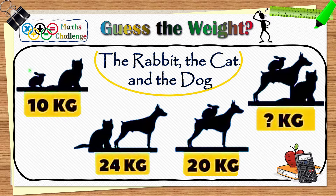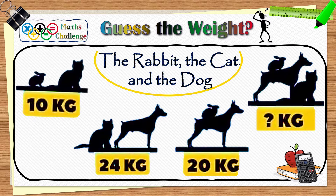In this puzzle, there are pictures of cat, rabbit and dog. One has to guess the cat, rabbit, dog weight by solving some equations from the given data in the pictures. Many people are finding it difficult to solve this weight puzzle, while many are wondering if their answer is right or wrong.